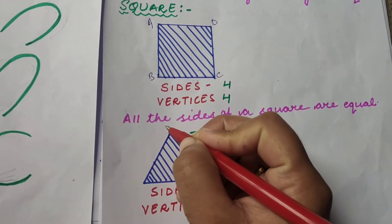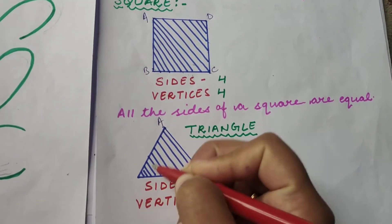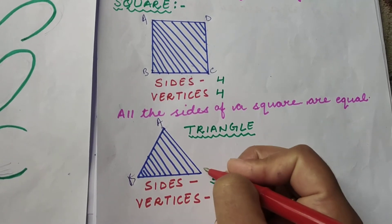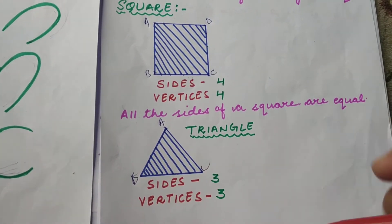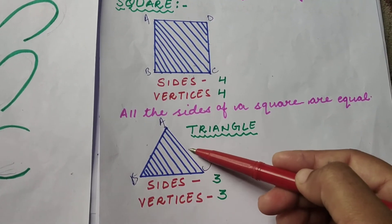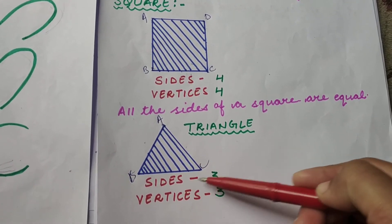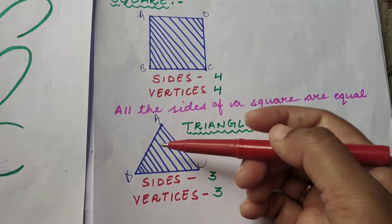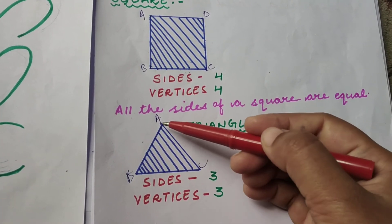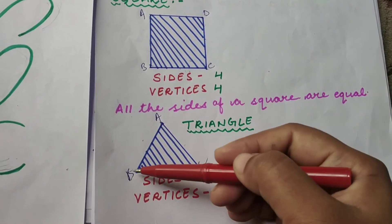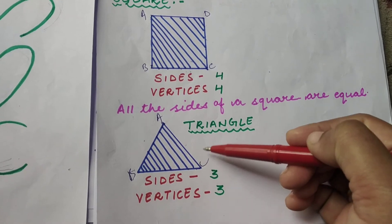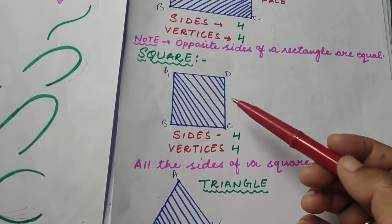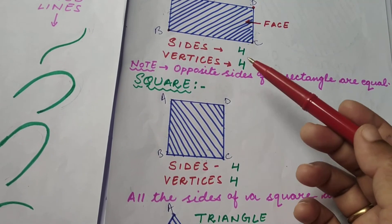The next figure is a triangle. A triangle has only three sides — one, two, and three. And vertices: how many vertices are there? Three — one, two, and three.